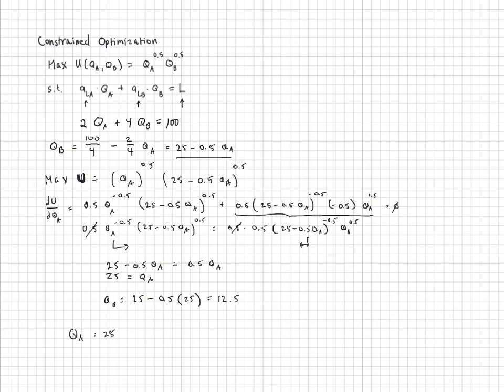Where on the PPF will we be? Well, we will be at the production point where the economy is producing 25, and since there is no trade, they must be consuming 25 of good A. And the economy is producing 12.5 of good B, and hence consuming that.